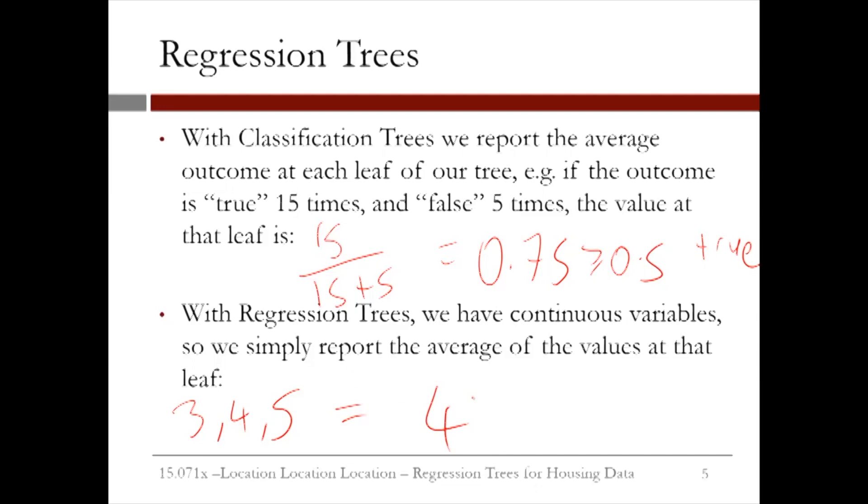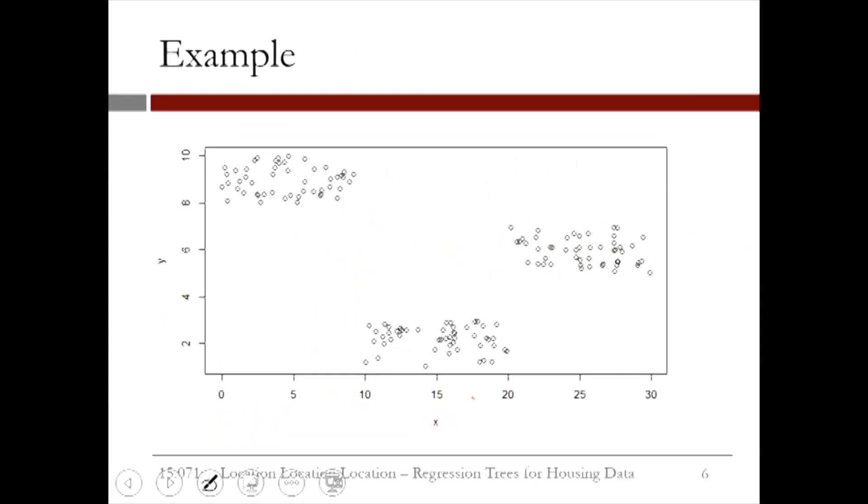Here is some fake data that I made up in R. We see x on the x-axis and y on the y-axis. Y is our variable we're trying to predict using x. So if we fit a linear regression to this data set, we obtain the following line. As you can see, linear regression does not do very well on this data set.